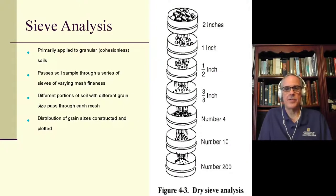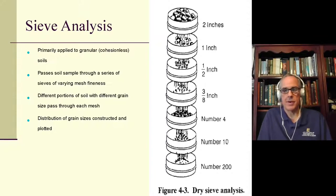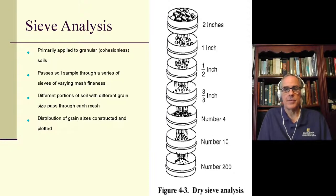The sieve analysis passes soil samples through a series of very fine mesh sieves. Many of these illustrations come from government publications, which are in the public domain. You start at the top with, say, a 2-inch sieve, then 1 inch, half inch, three-eighths inch, and number 4. We'll talk about the numbers here in just a minute.